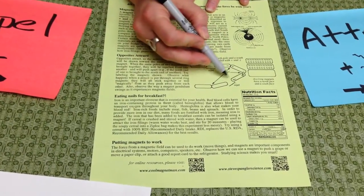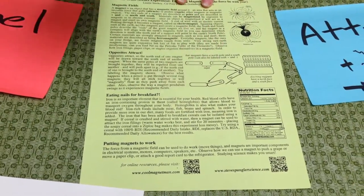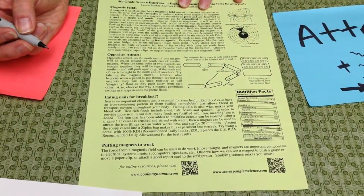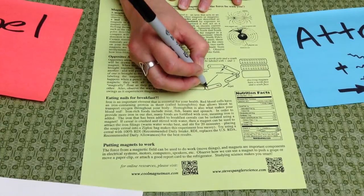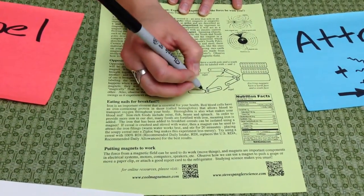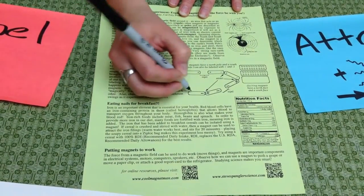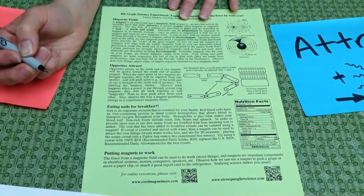If these two repel, they must have the same poles, so this end must be a plus if the other end is a minus. If these two are attracting, then if this is a plus, this must be a minus, and so this last one must be a plus as well.